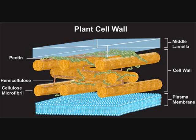The cell wall is the extracellular structure of plant cells, similar to the extracellular matrix in animals. The exact composition of the cell wall depends on the specific type of plant, but the basic design is the same for all plants. It is generally made of microfibrils made of the polysaccharide cellulose embedded in a matrix of other polysaccharides and proteins. This design is similar to steel-reinforced concrete — the cellulose is like the rebar embedded in the concrete that provides support and structure.